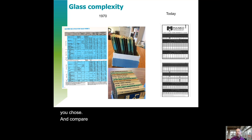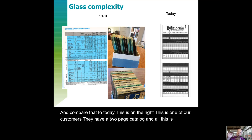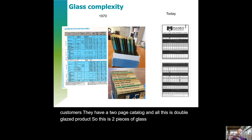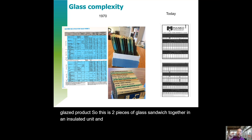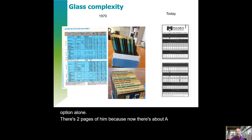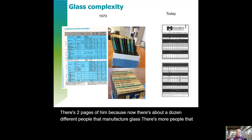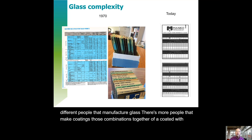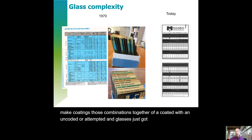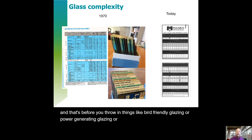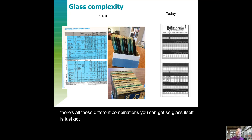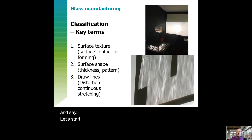Compare that to today — this is one of our customers and they have a two-page catalog, and all this is just double glazed products: two pieces of glass sandwiched together in an insulated unit. The variance of just that one option alone fills two pages. Because now there are about a dozen different people that manufacture glass, plus more people that make coatings. Those combinations together — coated with uncoated or tinted — and glass has just got really complicated. That's before you throw in things like bird-friendly glazing, power-generating glazing, heated glazing, or frit.